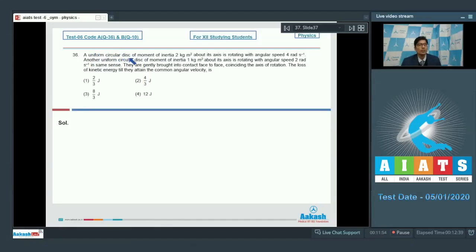Question 36 says, a uniform circular disk of moment of inertia 2 kg meter square about its axis is rotating with angular speed 4 radian per second. Another uniform circular disk of moment of inertia 1 kg meter square about its axis is rotating with angular speed 2 radian per second in same sense. This is gently brought into contact face to face coinciding the axis of rotation. The loss of kinetic energy till they attain the common angular velocity is.